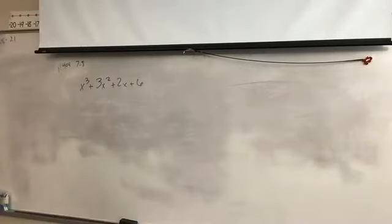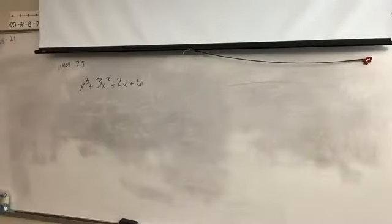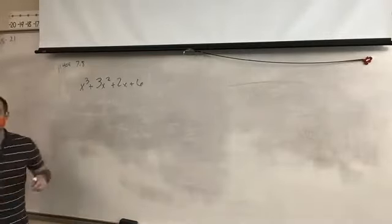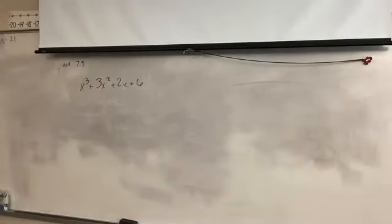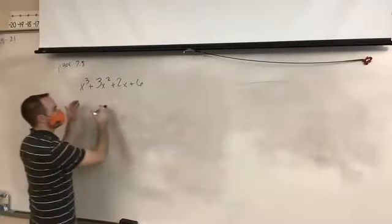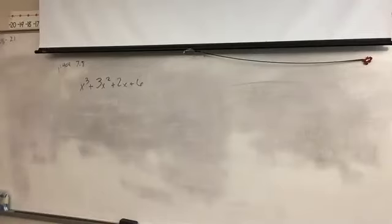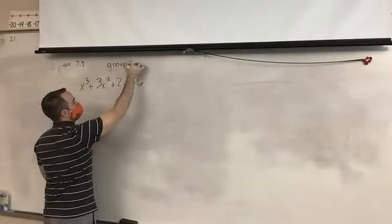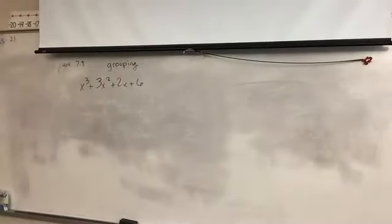Copy this down: x to the third plus three x squared plus two x plus six. What's the very first thing we always look for every single time? Greatest common factor. Does this have a greatest common factor between all four terms? No, there's nothing that all four terms have in common. We can't break it up into the patterns we've used before. There's no shortcut, so it has to be something new — and what we're going to do is called grouping.